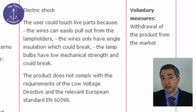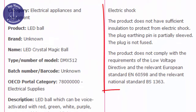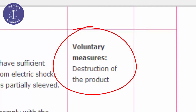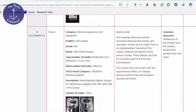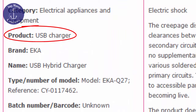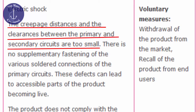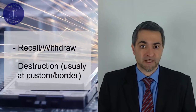As a result, this product has to be recalled. This is an example of a USB charger. These products, as you can see, have to be recalled, withdrawn, and some of them even destroyed at customs. We will talk extensively about creepage, clearance, and other safety aspects in this course.